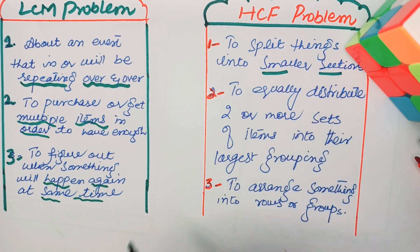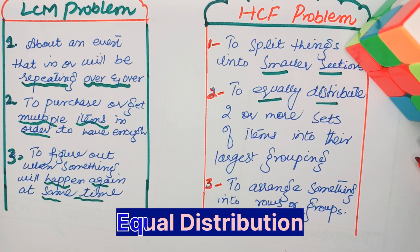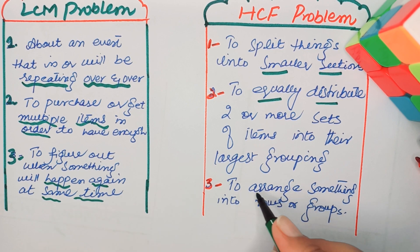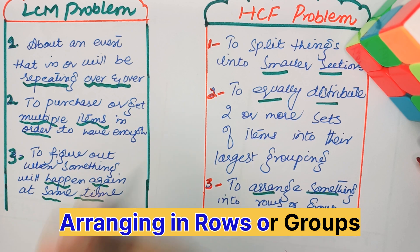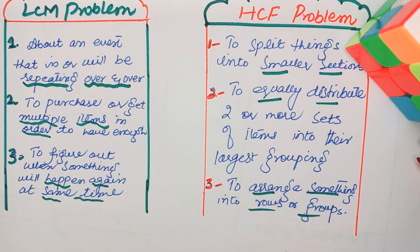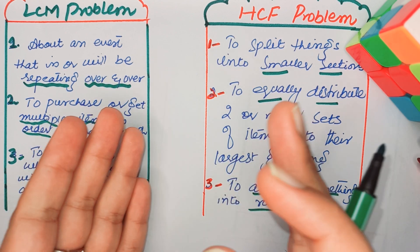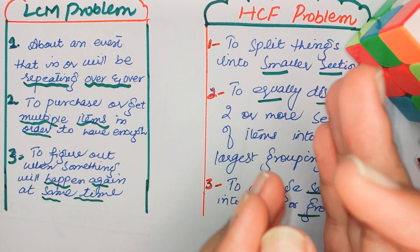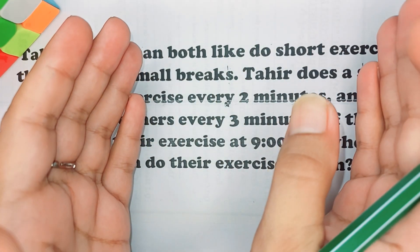If in a word problem you are distributing equally, then it's an HCF problem. The third HCF keyword is when you are arranging something into rows or groups — that's also an HCF problem. These are the key words that help you identify from a word problem whether you need to find LCM or HCF. Now let's look at a word problem to identify whether it's an HCF or LCM case.